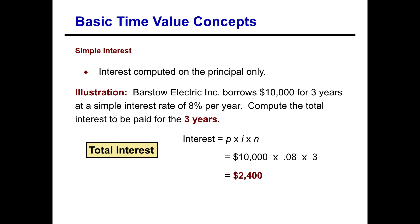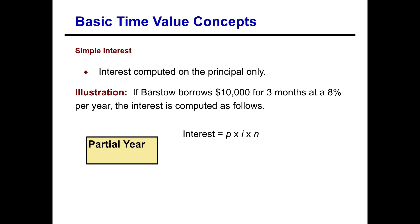But what if we have a partial period? For example, if Barstow borrows ten thousand dollars for three months at eight percent per year, the interest rate is computed as principal times rate times time. Since the interest rate is given on an annual basis, we convert three months to three out of twelve, or one-fourth of a year. So in this case the interest would be two hundred dollars for the three months.